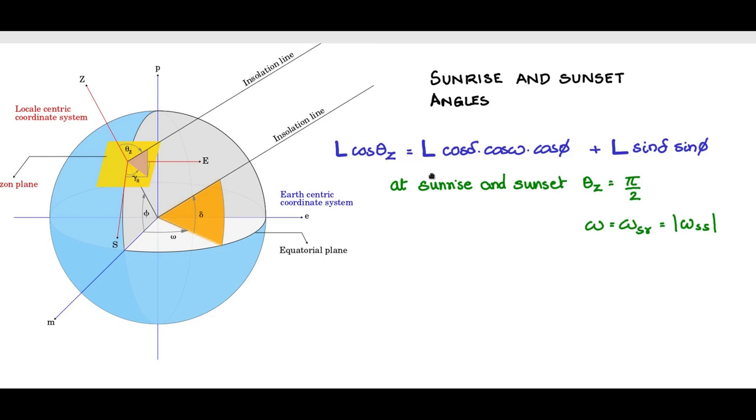Applying cos θz equals 0 at sunrise and sunset, you will have cos δ cos ωsr, that is sunrise angle, and cos φ plus sin δ sin φ is equal to 0, because cos θz is 0, θz being π/2.